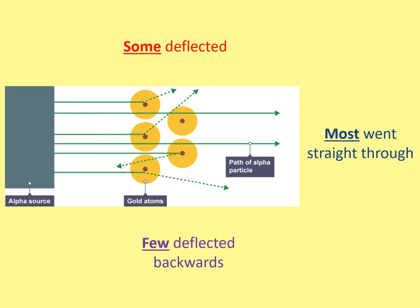The last result, shown in purple, is that few deflected backwards. Looking at the diagram you can see all three results: most went straight through, some deflected, and one deflected backwards. Those are the results — facts that were observed and written down. The next slide will look at what those results tell us — the conclusions we can draw.